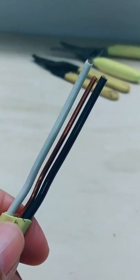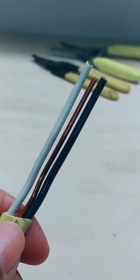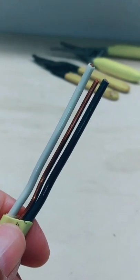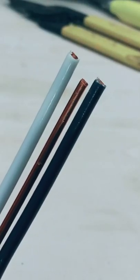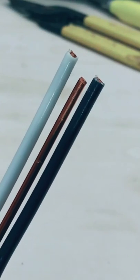This is 12 gauge non-metallic sheath cable. Now many of you may know it as Romex. I want to show you a technique that I use to quickly and effectively strip wires.